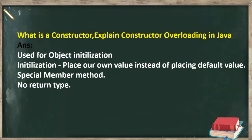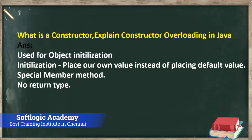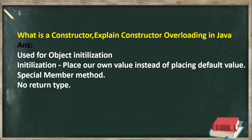Now, what is a constructor? Explain constructor overloading in Java. First of all, a constructor is used for object initialization — we can initialize the object, storing required values instead of default values. We can keep those required values inside the constructor. It is a special member method, and a constructor does not have a return type.